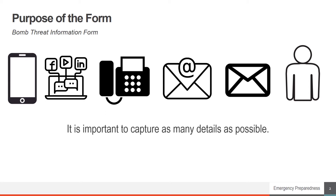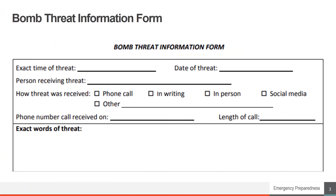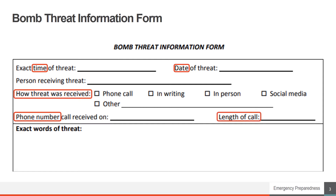Gathering as much information about the exact threat and the person making the threat is crucial to emergency personnel who respond to it. Try to be as detailed as possible when filling out the Bomb Threat Information Form. It is important to include time, date, how the threat was received, phone number if applicable, and the amount of time you spent on the phone with the caller.